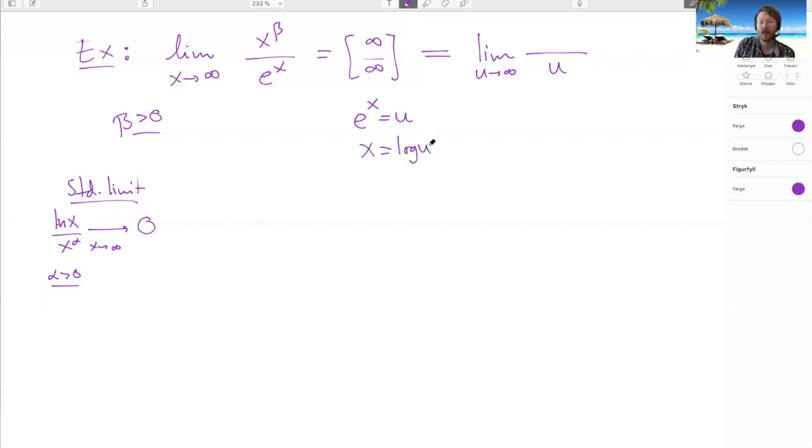Or ln(u) means the same to me, but let's use the same notation here. So this is now ln(u) to the beta, and by the change of variables formula this is all good. And then you see here, okay, but here we have ln without the power, but we have a power on the x.